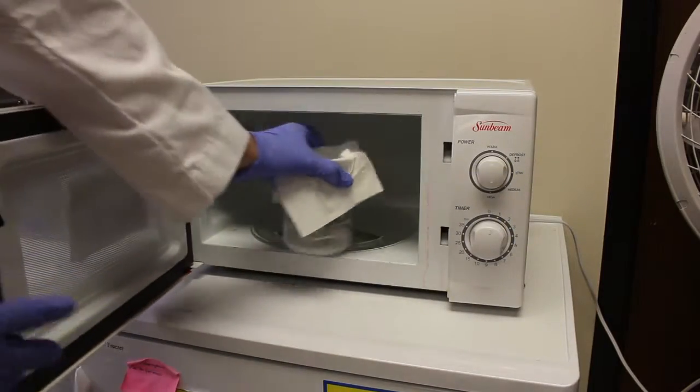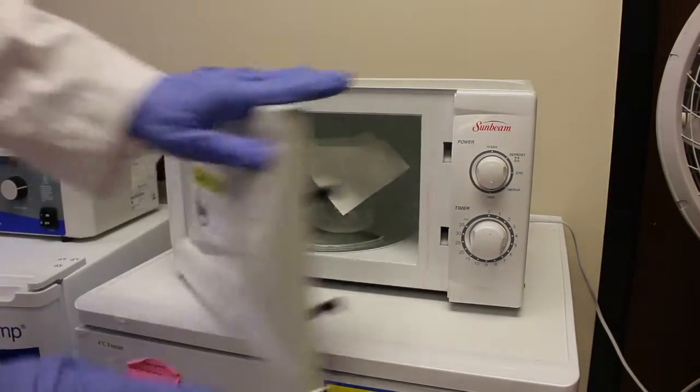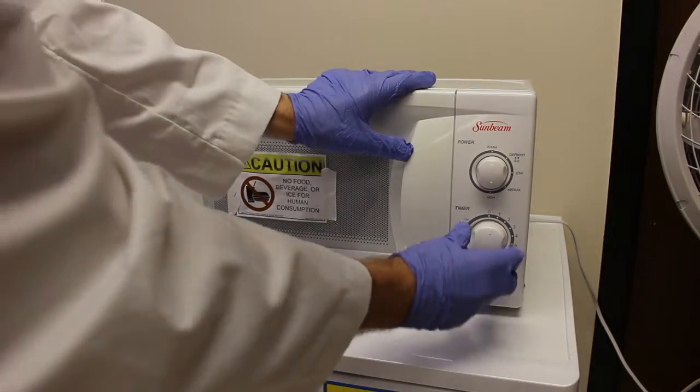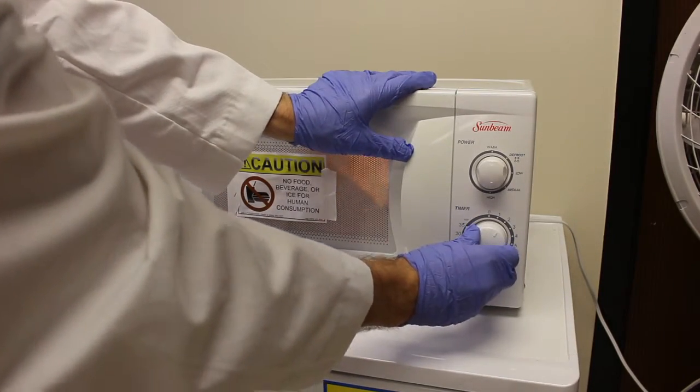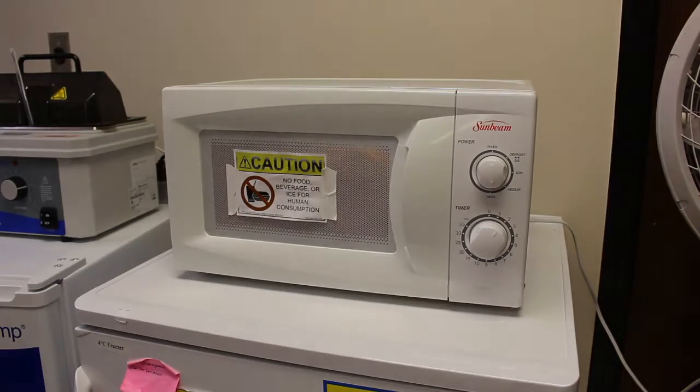Cover the beaker with a paper towel to prevent boil over. Place it within the microwave oven and heat on high for around 20 seconds. Heating times often vary widely depending on the age and efficiency of the microwave.